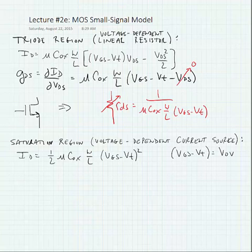We have our current equation, and we can define a term, Gm, which is our transconductance that's equal to dID by dVGS. And this is equal to mu Cox W over L times Vov.